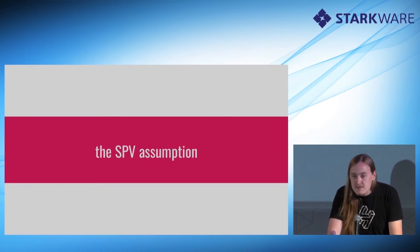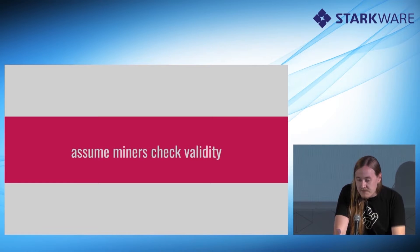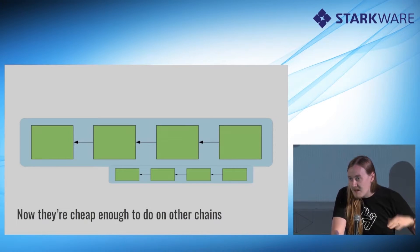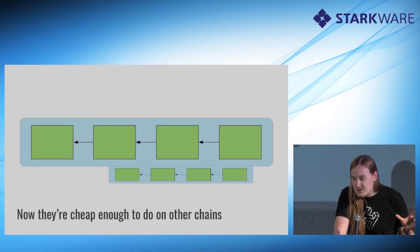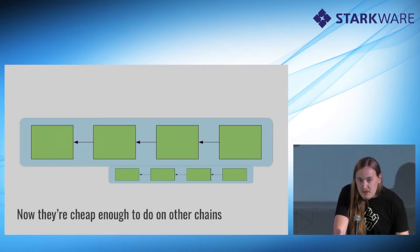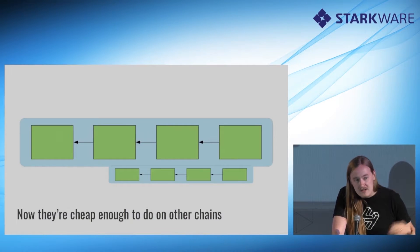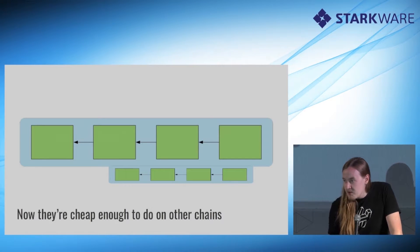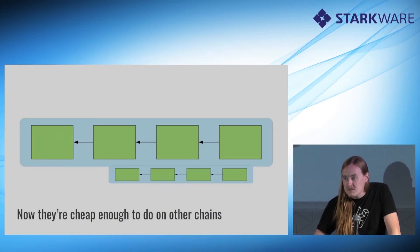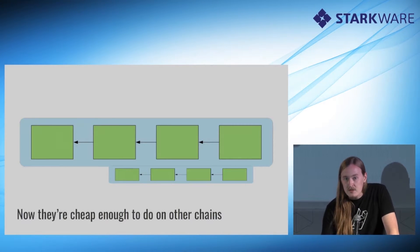To do that, we use the SPV assumption, which is that miners check validity. We've already said we follow the heaviest valid chain, but in SPV we don't check validity — we can't know what is valid, and that's how we get the computational savings: processing 80 bytes instead of 1.4 megabytes. We're assuming that someone else is checking validity and that the heaviest chain will be valid. The headers alone give us enough information to check weight, so we can follow just 80-byte headers to see which chain is heaviest, but we don't necessarily know it's the objectively correct Bitcoin chain. It's a weaker security assumption than running a full node.